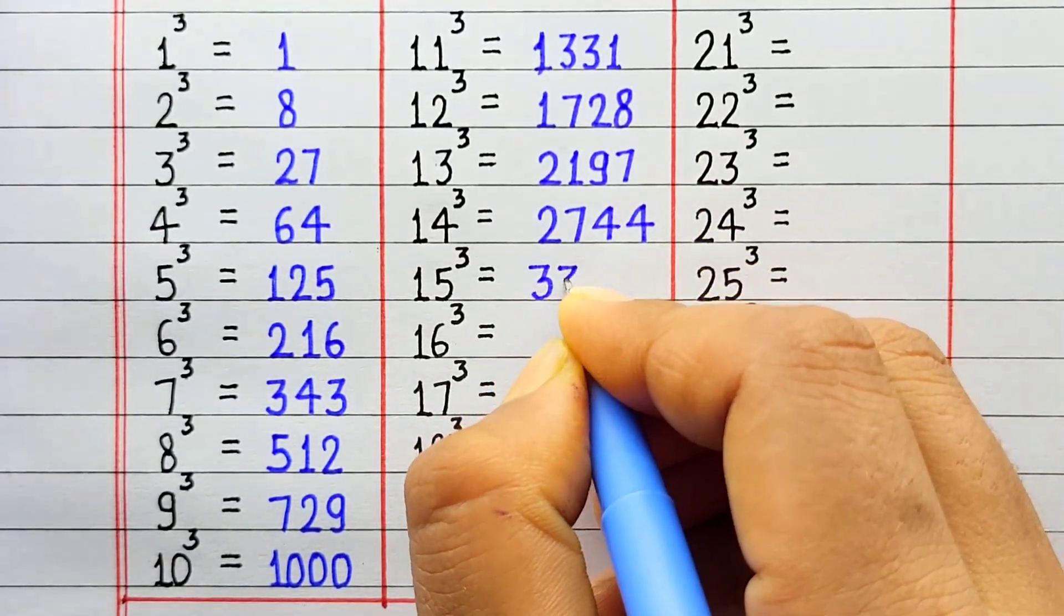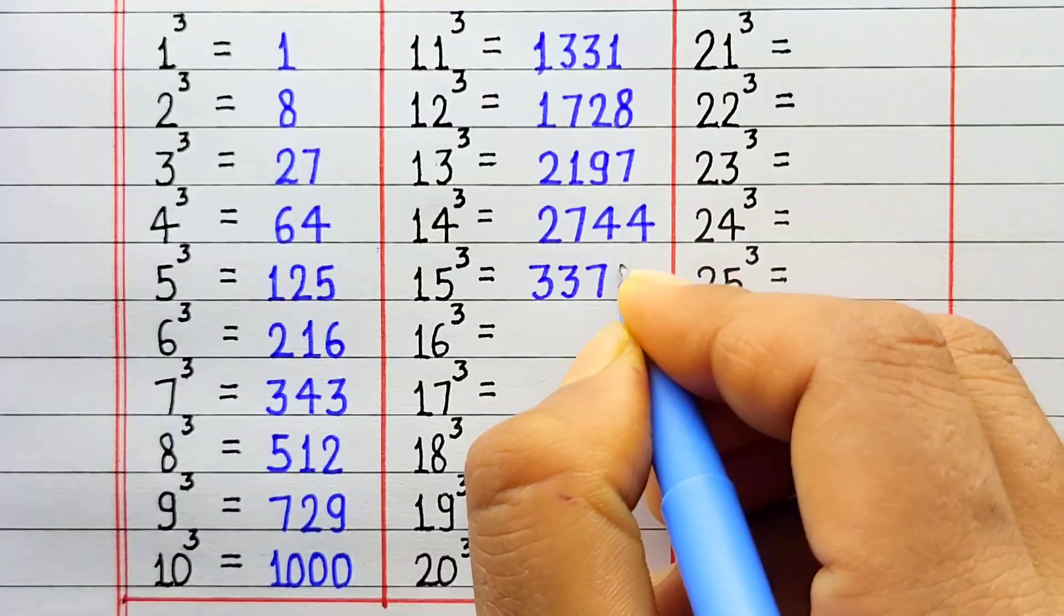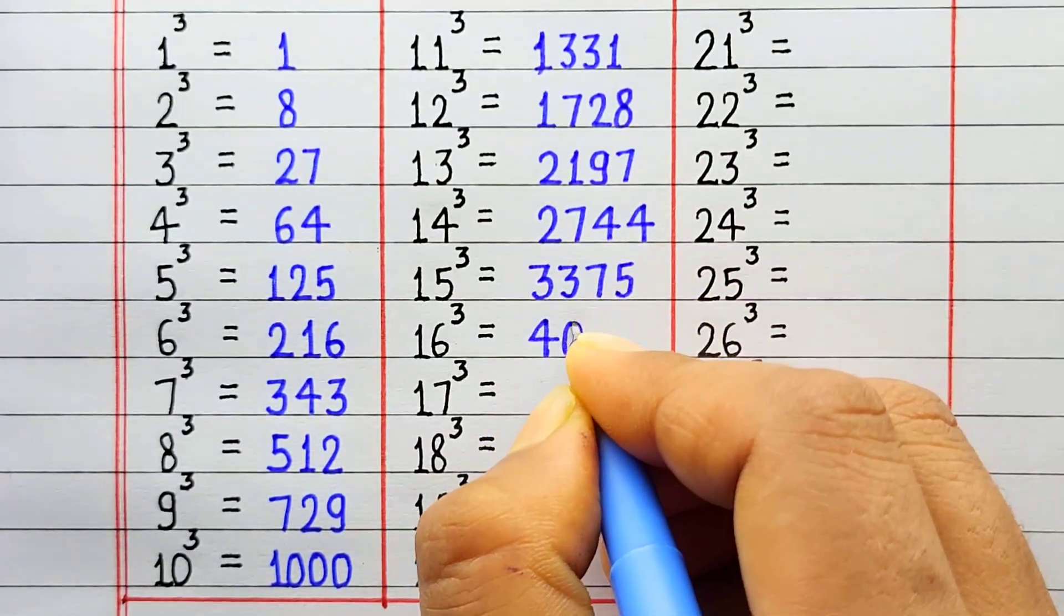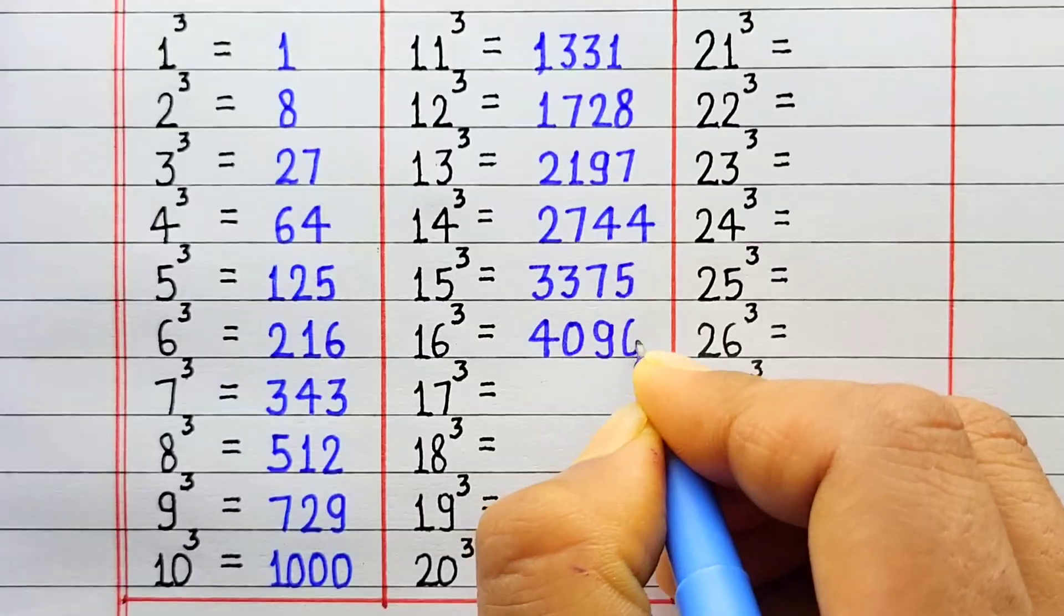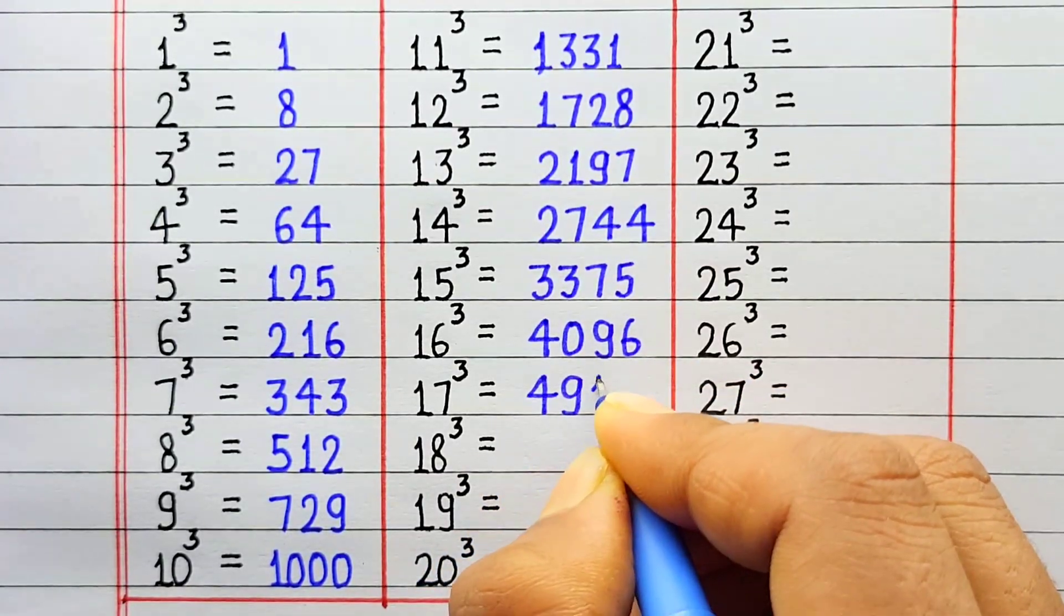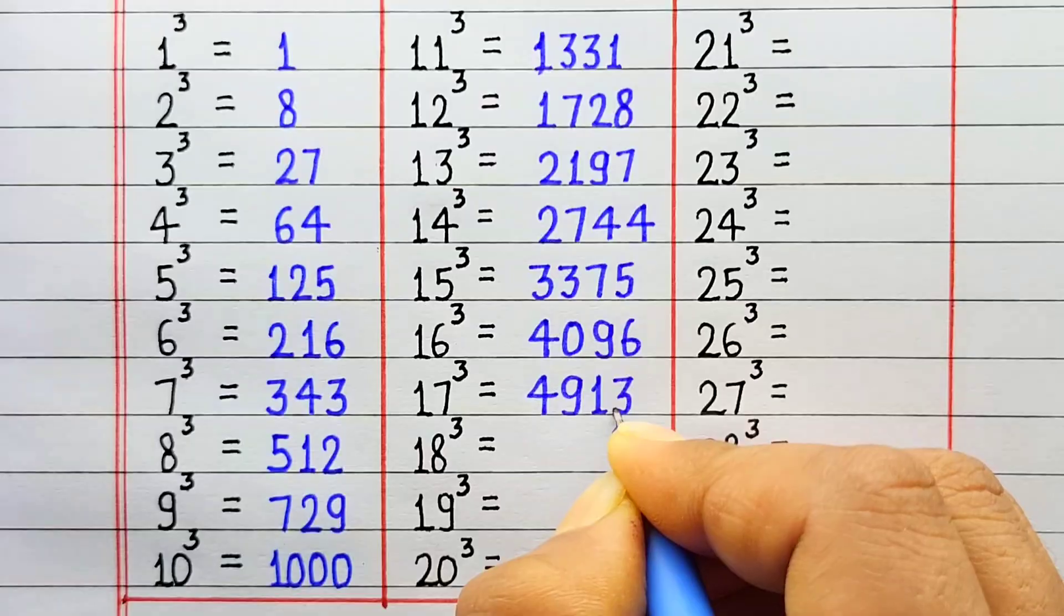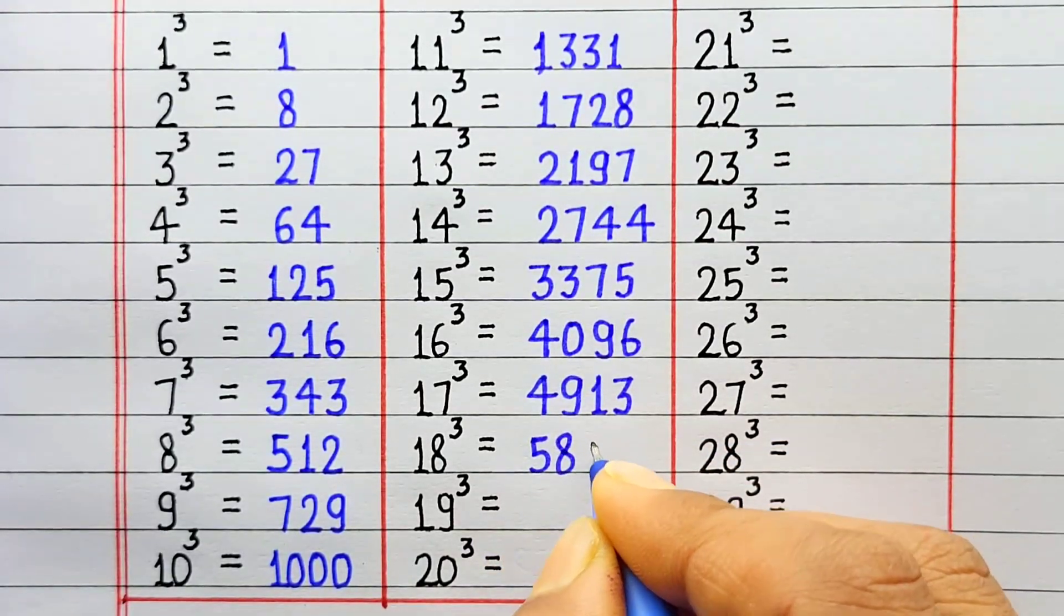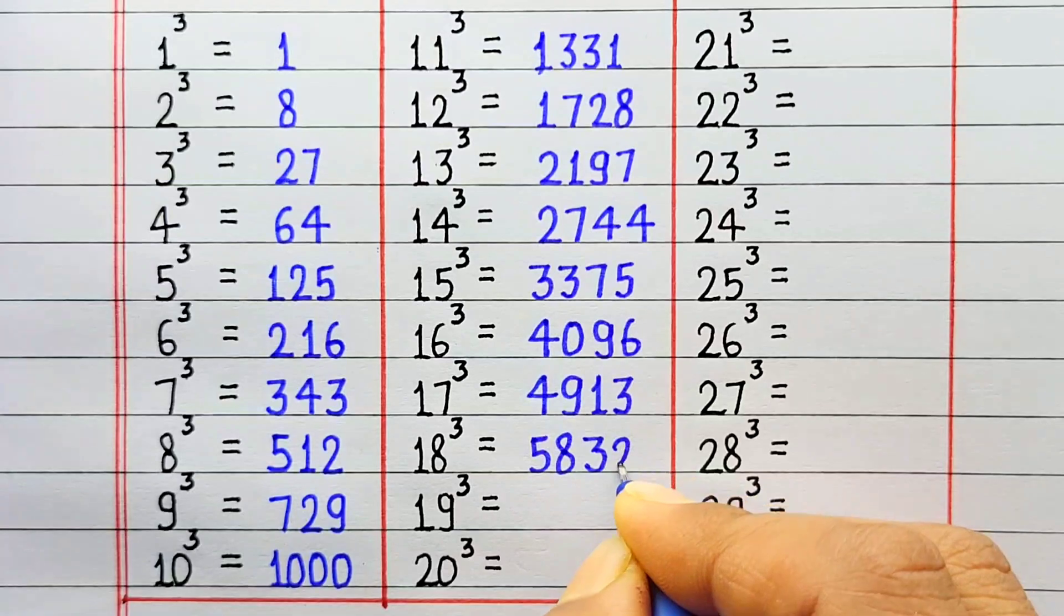Cube of 15 is 3375. Cube of 16 is 4096. Cube of 17 is 4913. Cube of 18 is 5832.